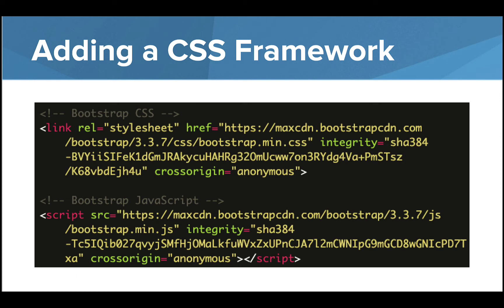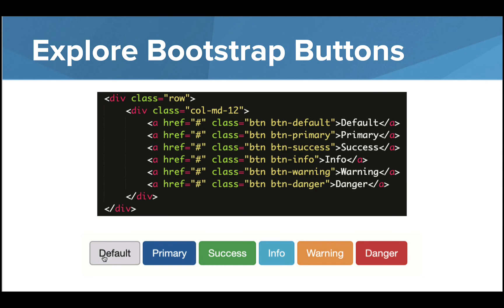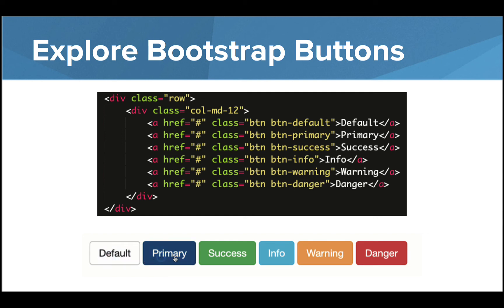Let's take a look at how some of the Bootstrap components can be added to your HTML file once the Bootstrap framework links are created. CSS frameworks often rely on classes. To call on a specific component or styling, you add a class to your HTML elements such as div tags and anchor tags. In this example you can see two different div tags. The first indicates that the row Bootstrap class should be used to align the buttons in a row. The second div tag extends the Bootstrap grid system and puts the buttons into a 12-column layout. Each anchor tag also includes two Bootstrap classes — the first calls on the BTN or button component, and the second styles the button with one of the six primary button types in Bootstrap. This code produces the buttons shown.